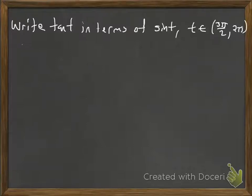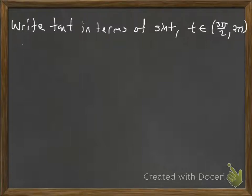We're going to take a look at writing the tangent of an angle t in terms of sine of an angle t, given that t is in the interval negative 3π/2 to 2π/2. So that's Quadrant 4, which means that the sine is going to be negative.